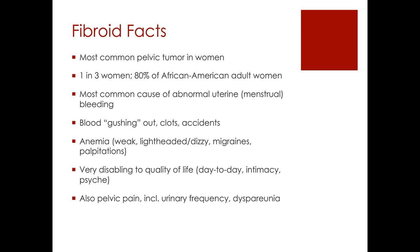Women may get episodes of blood literally gushing out like a faucet — flooding, clots, accidents, soiling clothes and linens. It can be very embarrassing. It can often keep people in their house for a couple of days each month. They can't work, they can't go out, they don't want to be around people because they don't know when these big accidents are going to hit. Because they lose so much blood every month, they become anemic and weak, getting lightheaded or dizzy, migraine-like headaches, or palpitations. They may even crave ice.